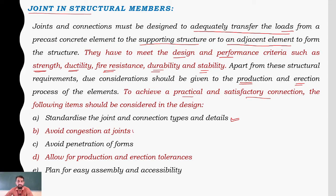Avoid congestion at joints. Avoid penetration of forms — it should be easily acceptable; we should not be forcing the element to fix it. Allow for production and erection tolerances. Plan for easy assembly and accessibility. These points are all to be considered before we do the jointings.